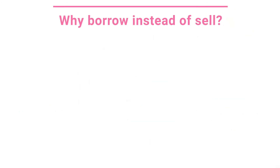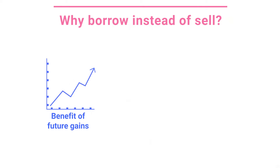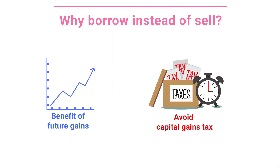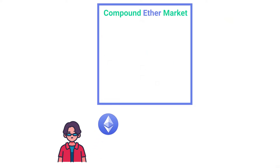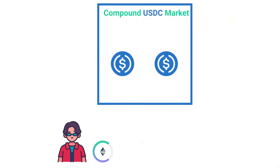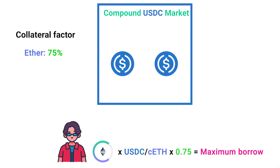If loans are over-collateralized, you may ask why would I borrow instead of just selling my assets? Well, selling your assets means you will miss out on any future gains on that asset. By borrowing, you are able to obtain capital without selling your assets, and you can also avoid capital gains tax. Suppose you are holding Ether for the long term and you need USDC to pay for an unexpected expense — you can borrow USDC against the value of your Ether. First you need to deposit your collateral token with a lending platform such as Compound. Say you deposited 2 ETH and received 2 CETH into your wallet. Now you can use that CETH to borrow from Compound's USDC market. The amount you can borrow is limited by the collateral factor — if the collateral factor for ETH is 75%, it means you can borrow up to 75% of the value of your CETH in USDC.